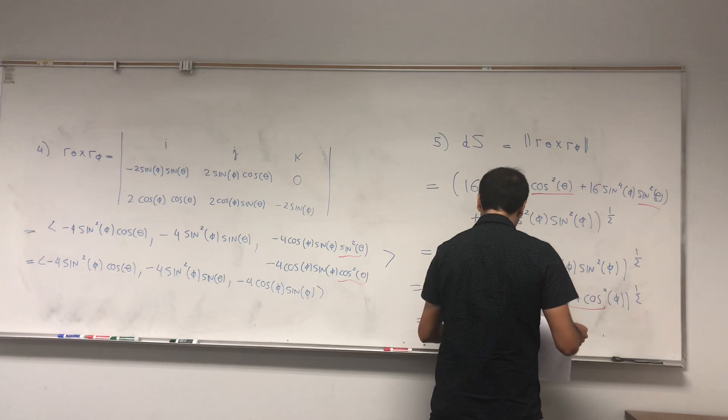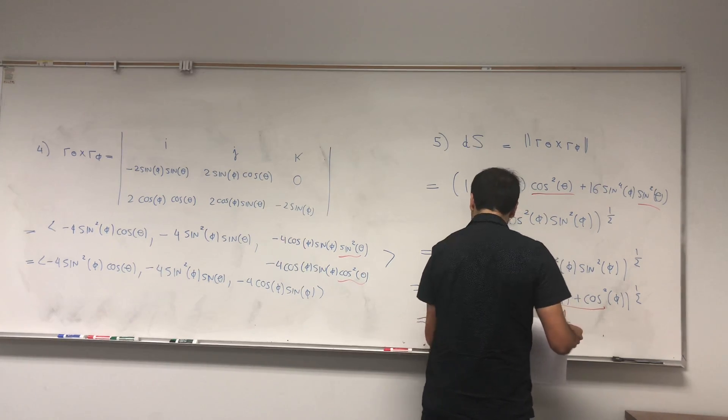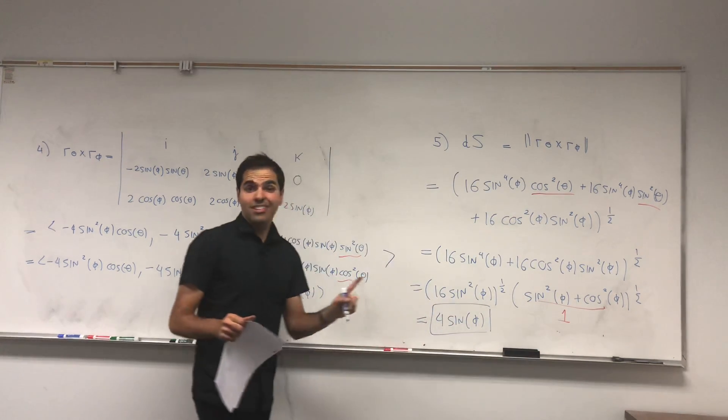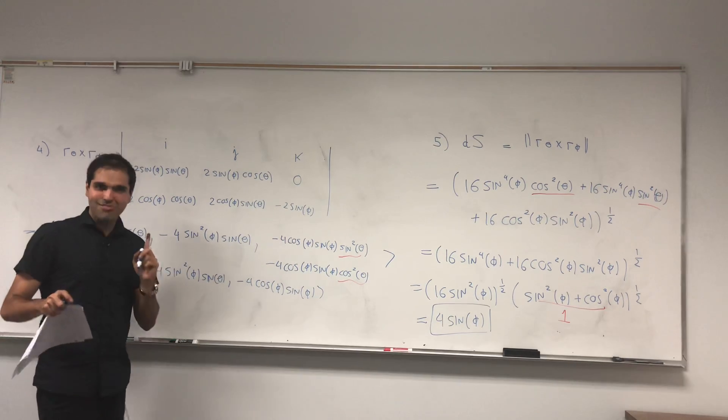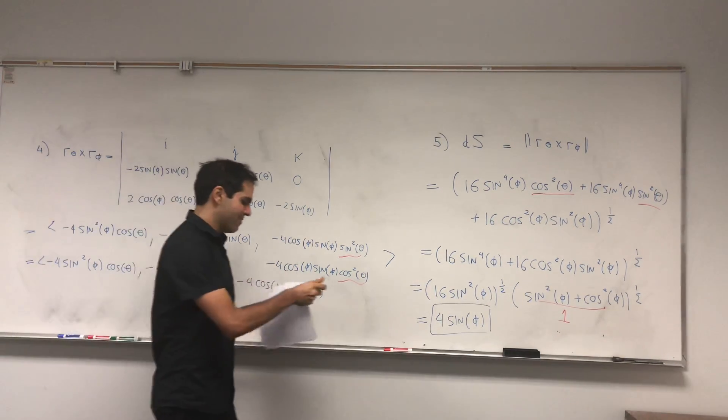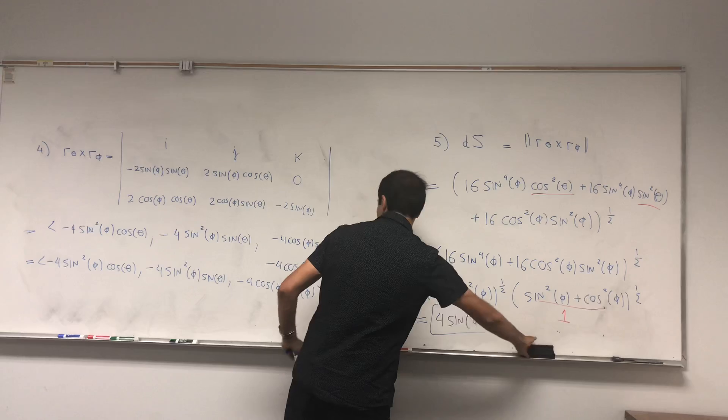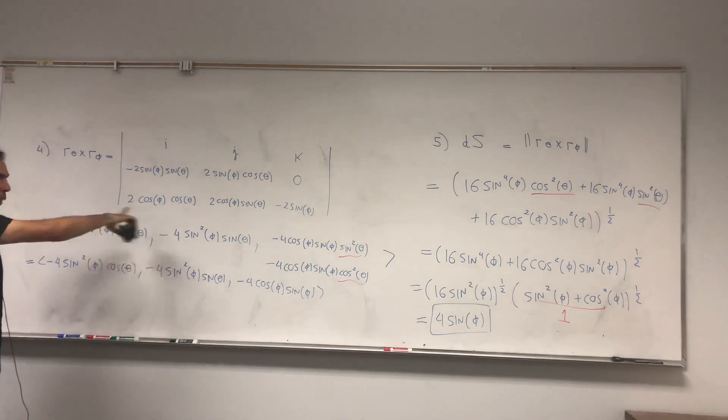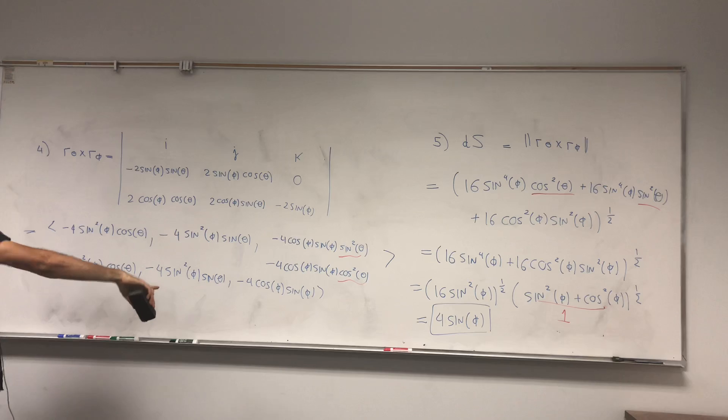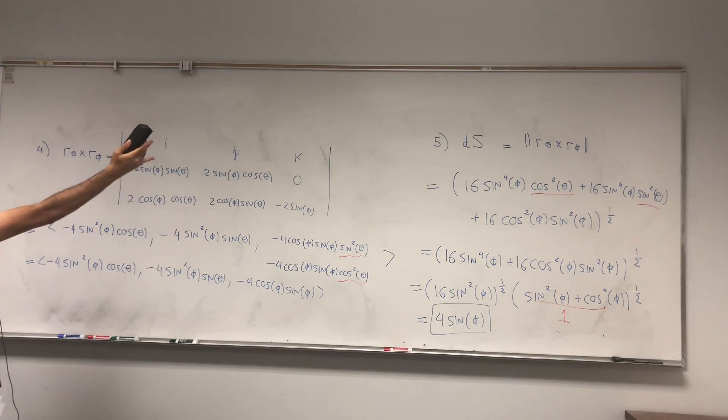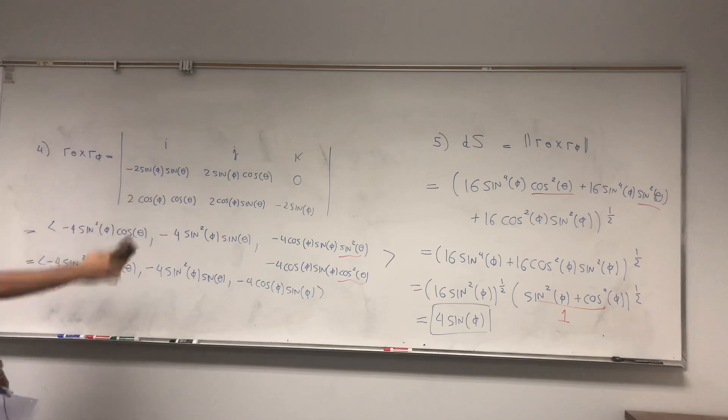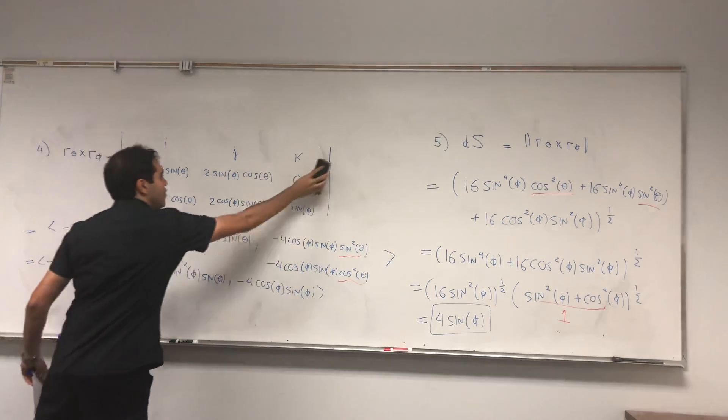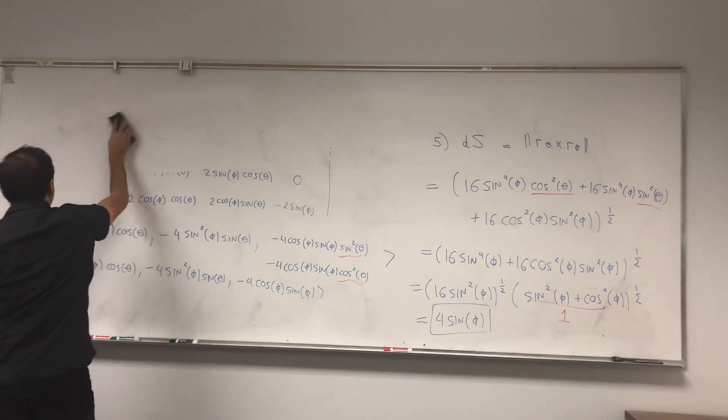And if you cancel that, you get four sin(phi). It's supposed to be absolute value, but in a second I explain why we can erase that. So you see, we started with this horrible vector where we did have one simplification. And it turns out if you calculate the length of it, it's actually very easy. It's just four sin(phi).